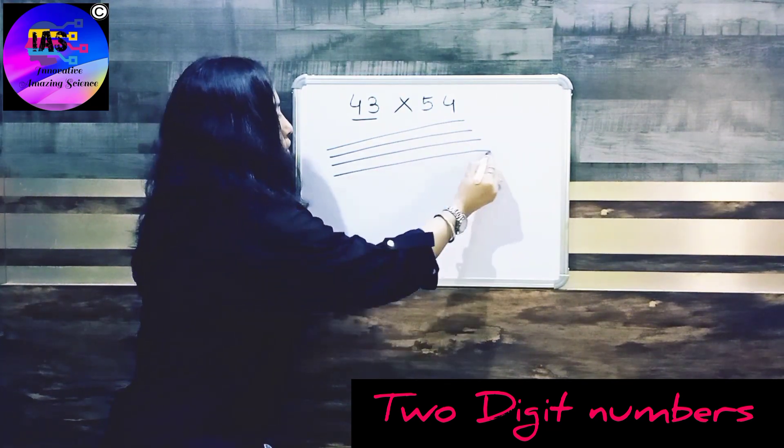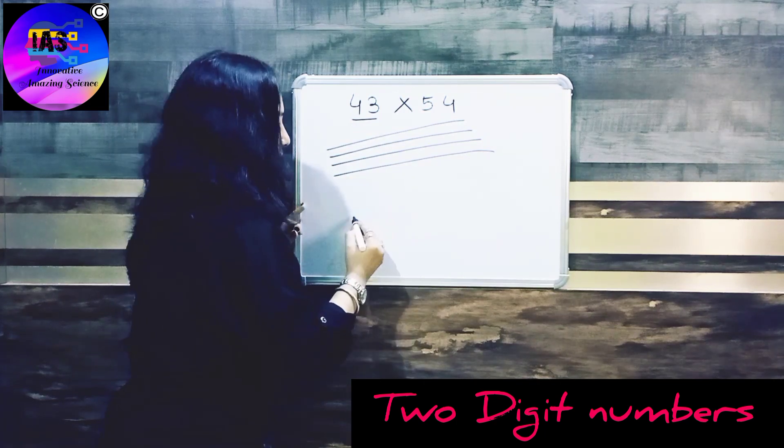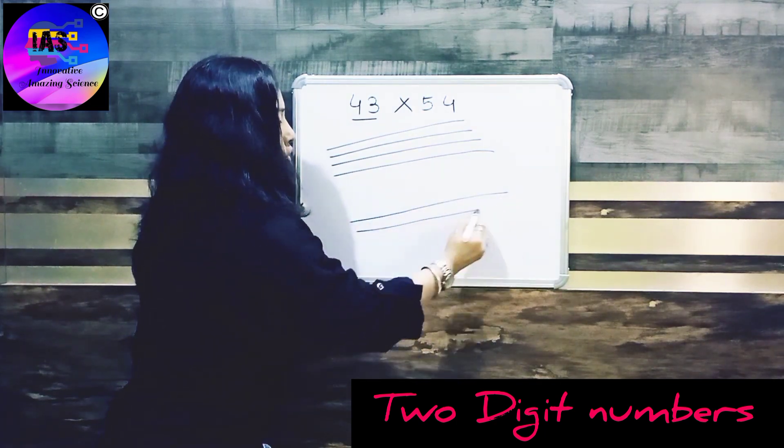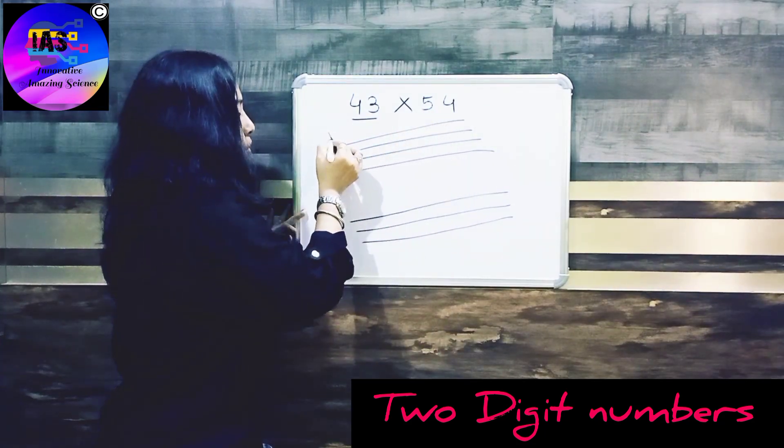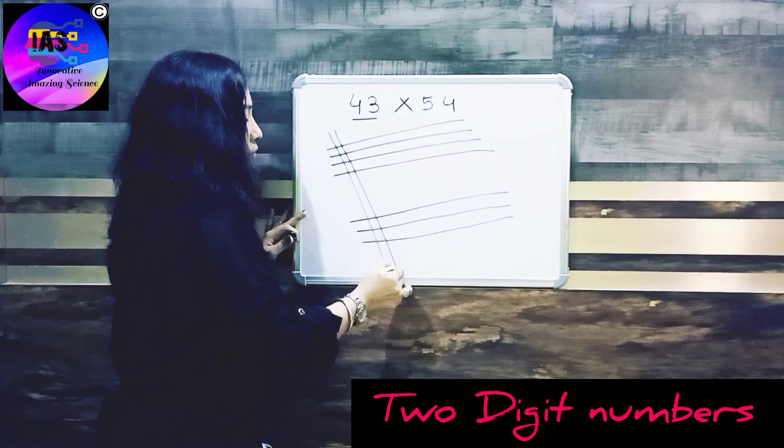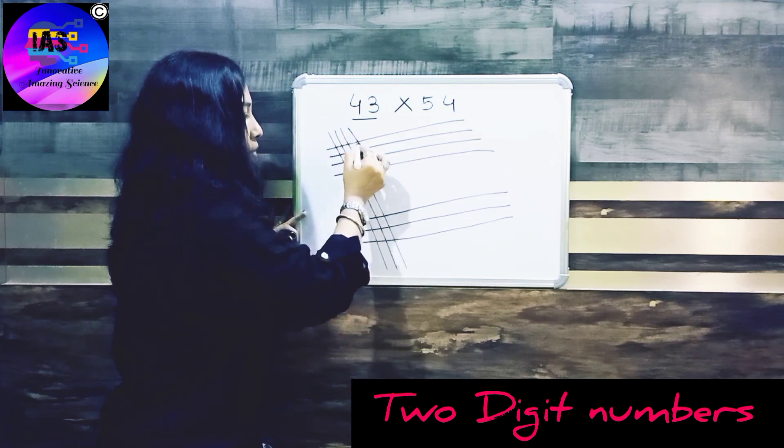And here we have 54: one, two, three, four. And here we have four: one, two, three, four.